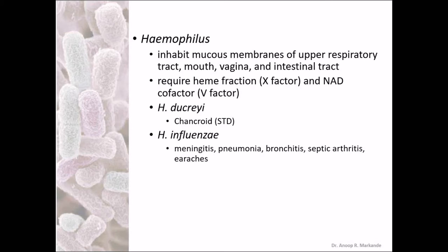Haemophilus inhabits mucous membranes of the upper respiratory tract of human beings. It is also present in the mouth, vagina, and intestinal tract. It requires heme fraction — also known as X factor — and NAD cofactor — also known as V factor — for its survival. Haemophilus ducreyi causes chancroid disease, an STD or sexually transmitted disease. Haemophilus influenzae causes meningitis, pneumonia, bronchitis, septic arthritis, and epiglottitis. Haemophilus is also the organism whose genome was the first to be sequenced.